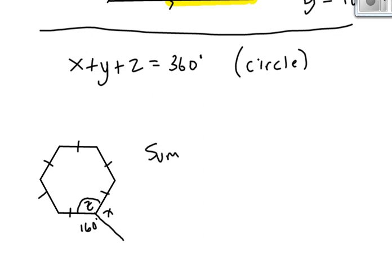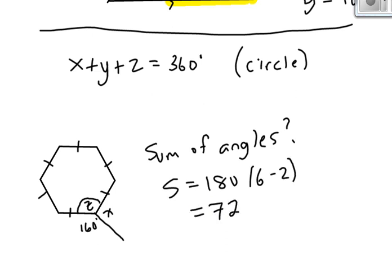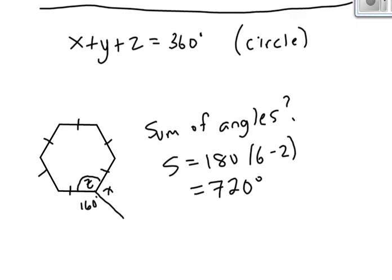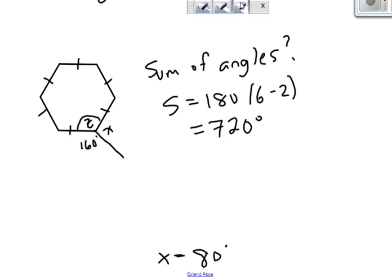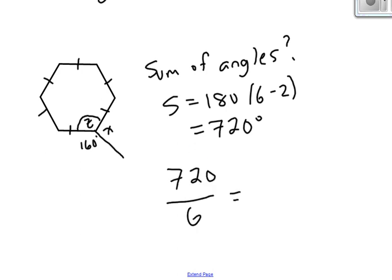What is the sum of the angles in a six-sided polygon? We have a formula for that. It's 180 times 6 minus 2. So the sum of the angles in a six-sided polygon is 720 degrees. Because it's regular, there are six sides, and I can divide each side evenly into six pieces. That means each angle is 120. Now I know the measure of angle Z is 120.